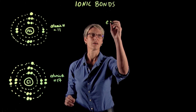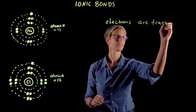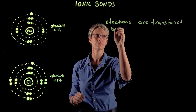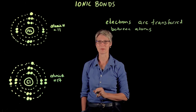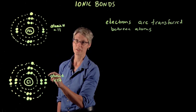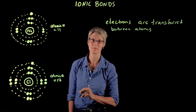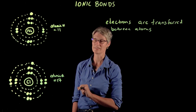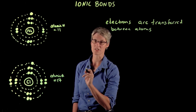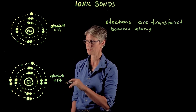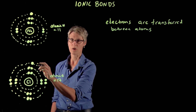In an ionic bond, electrons are actually transferred between atoms. To give you an example of how that works, I've drawn sodium and chlorine. If you look at the electron configurations, sodium has an atomic number of 11, so it has a full shell 1, a full shell 2, and in shell 3 it has a single electron — so shell 3 is pretty much completely empty for sodium. Chlorine in contrast has a full shell 1, a full shell 2, and shell 3 has only one unpaired electron in it.